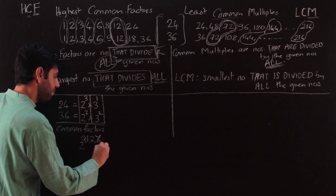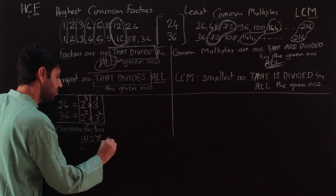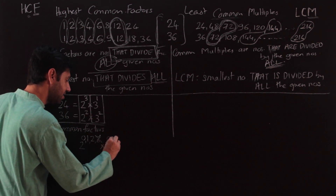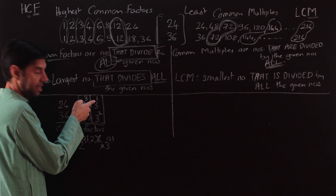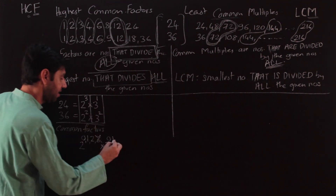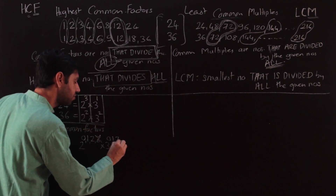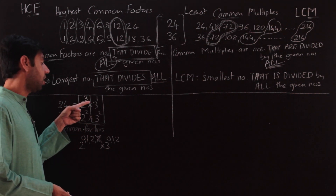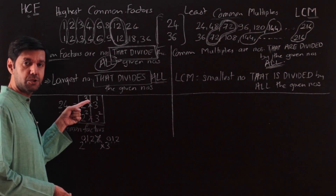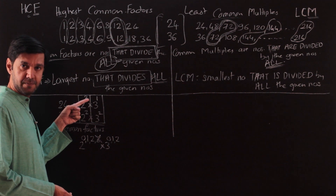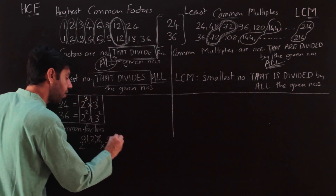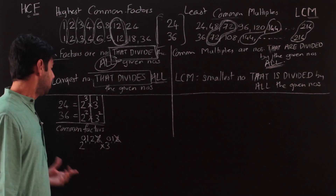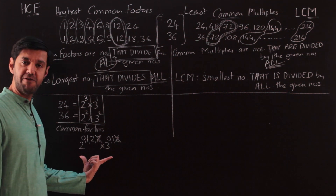Similarly, looking at the powers of 3: 3⁰ = 1 divides everything; 3¹ divides both 3¹ and 3². But 3² will not divide 3¹, so I cannot use 3² or any higher power of 3. Hence these are my common factor building blocks: powers of 2 up to 2², and powers of 3 up to 3¹.